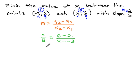Let's clean this up a bit. We have 2 fifths is equal to 6 minus 2 or 4, and the opposite over x plus 3.